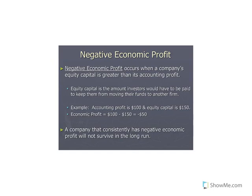The opposite is negative economic profit. Say our accounting profit was only $100 million, but shareholders were expecting to make $150 million — we missed the mark by $50 million, giving economic profit of negative $50 million. Not only might this cause current investors to invest elsewhere, it certainly won't entice any new investors. Nobody wants to become an equity holder in a firm not meeting the opportunity costs of its shareholders.